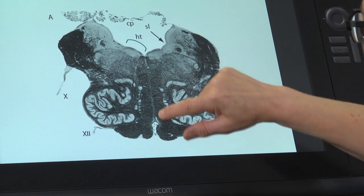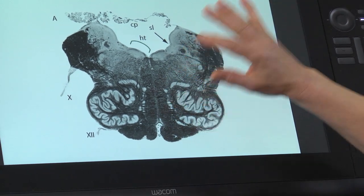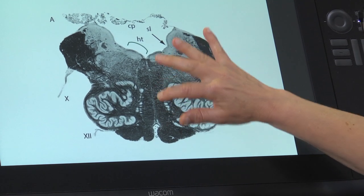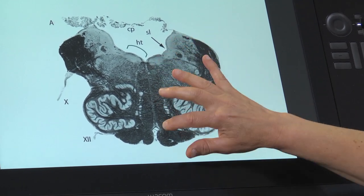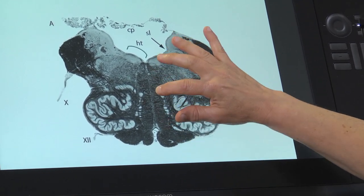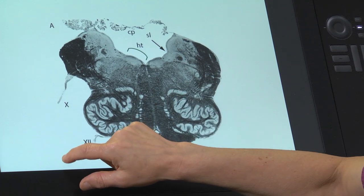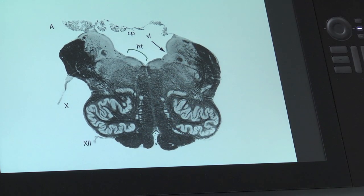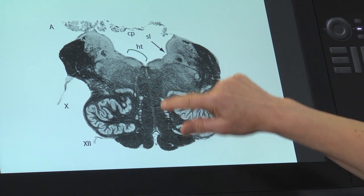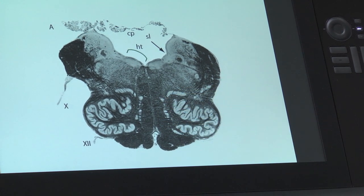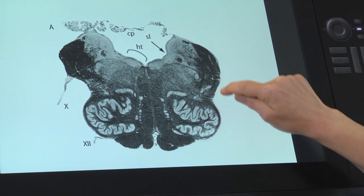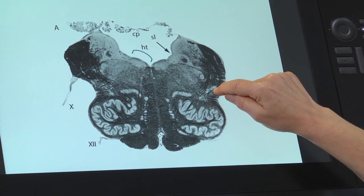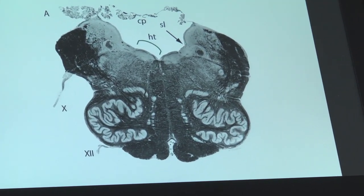Here's the medial lemniscus. The dorsal column nuclei are gone, and now light touch, proprioception, and vibration are traveling contralateral to the part of the body they come from, and ipsilateral to the cortex which they will ultimately influence. Right over here is the spinothalamic tract, and also traveling here is the oculosympathetic tract.